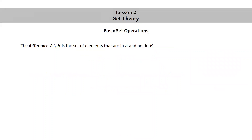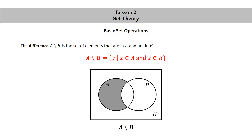The difference A minus B is the set of elements that are in A and not in B. We use this set minus symbol for the difference. So we have A minus B is the set of X such that X is in A and X is not in B. Here's a Venn diagram allowing us to visualize the set difference A minus B. Notice how we shade the part of A that does not include B.